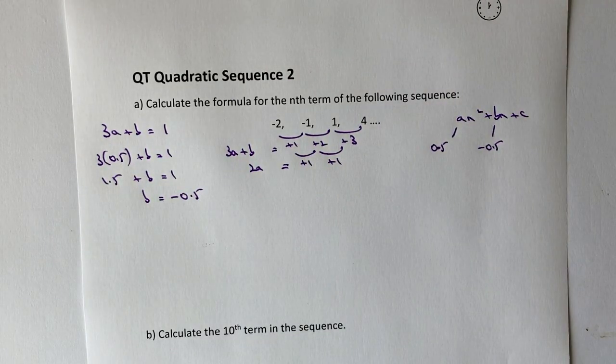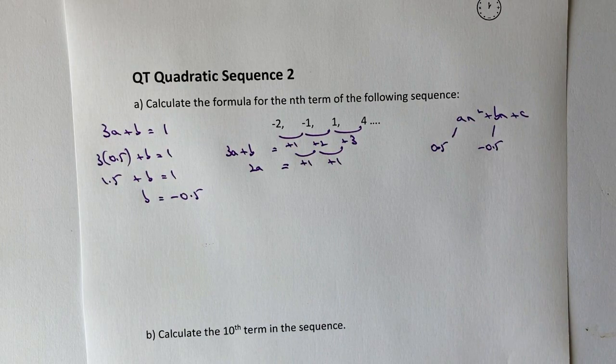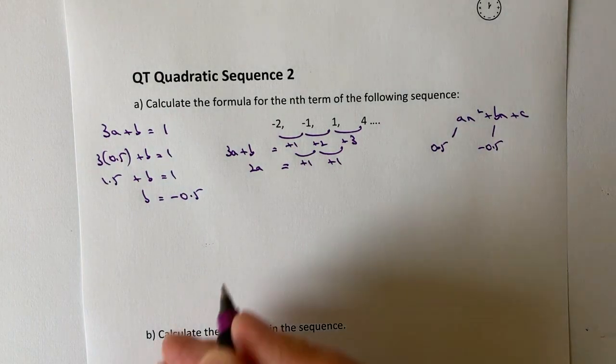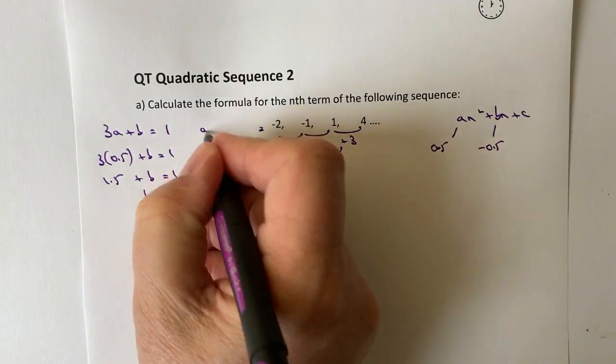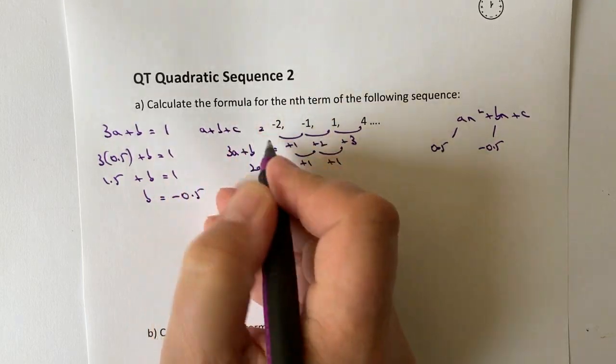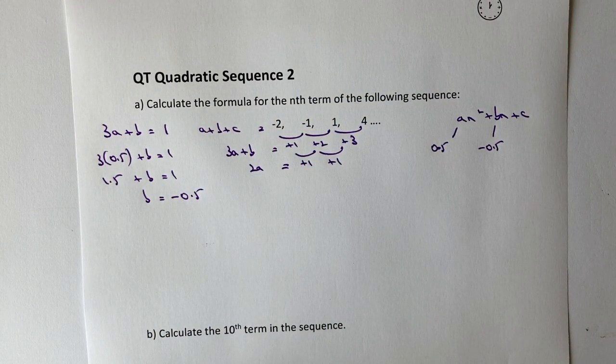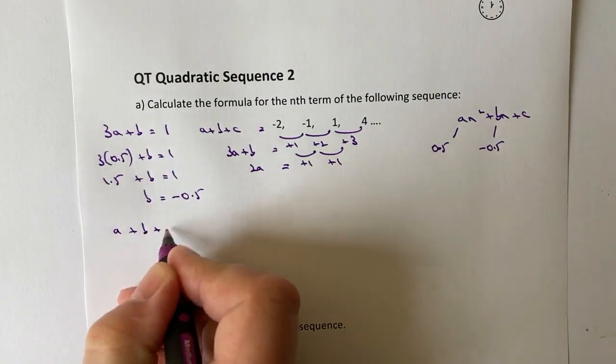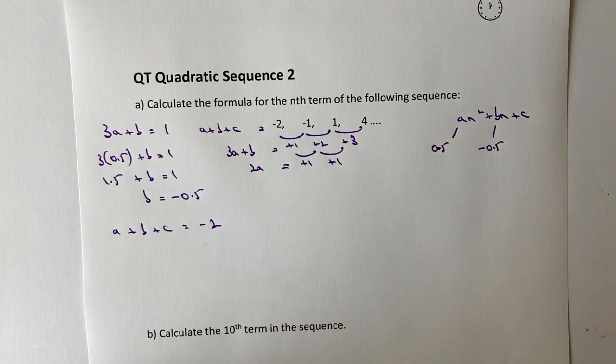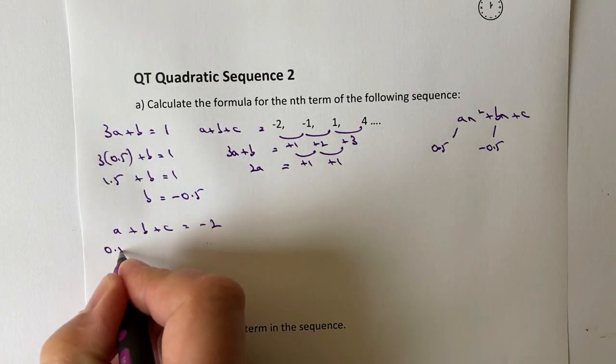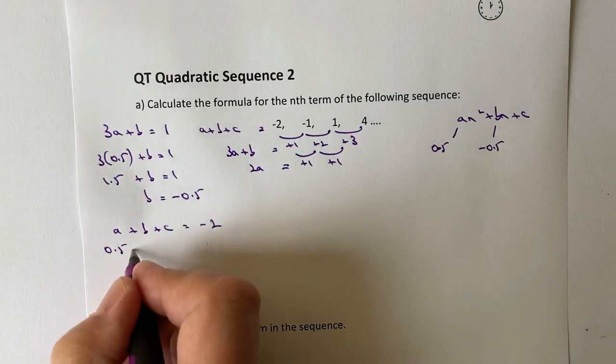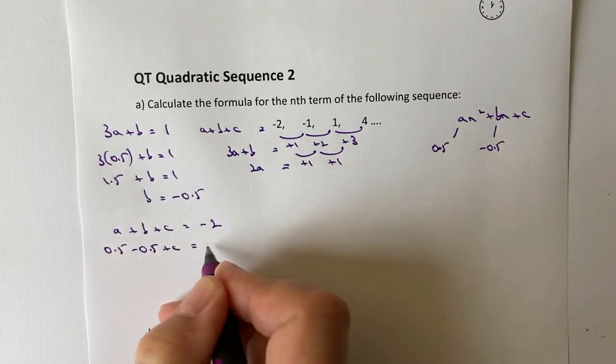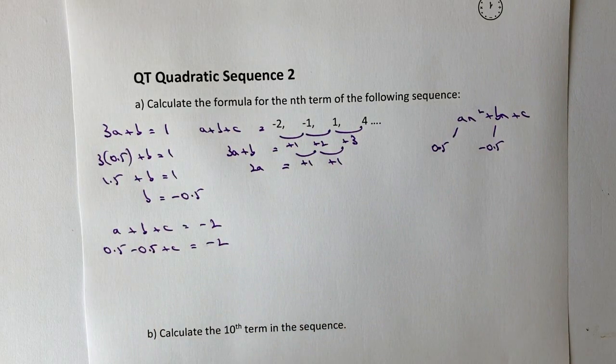And then the final piece of this is to find the value of c, where I use the formula 3a + b + c equals -2. So again, I can write that out: a + b + c equals -2. So I've got my value of a which is 0.5, I've got my value of b which is -0.5, I'm working out c and that equals -2.